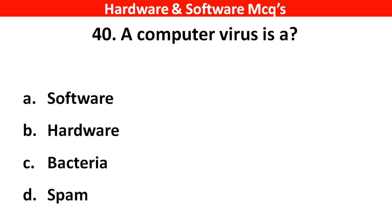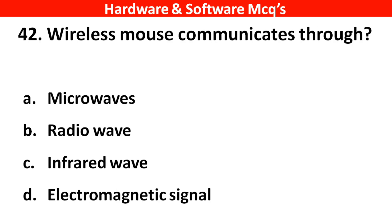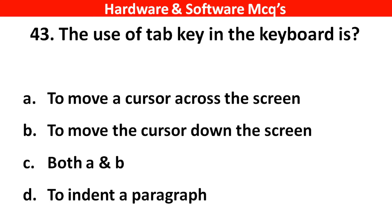Next question: A computer virus is a ___. The right answer is option A — software. Next question: Wireless mouse communicates through? The right answer is option B — radio waves. Next question: The use of the Tab key in the keyboard is ___. The right answer is option B — both A and B.